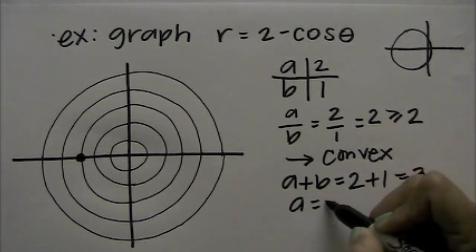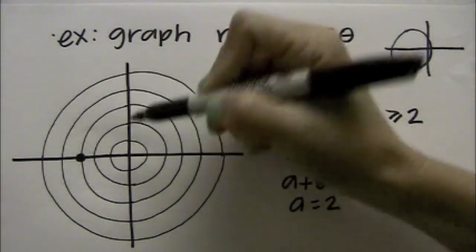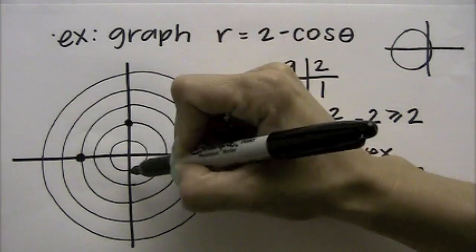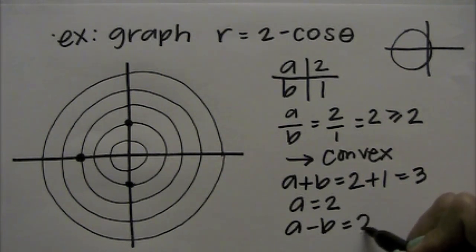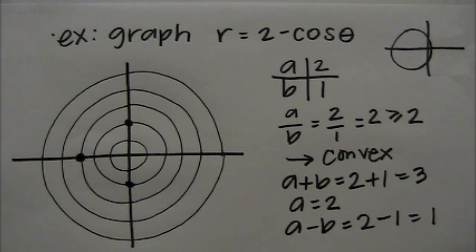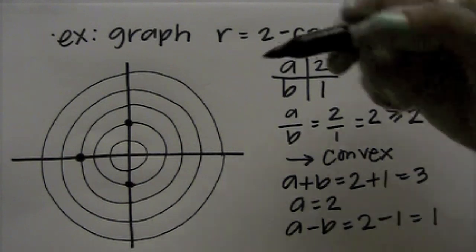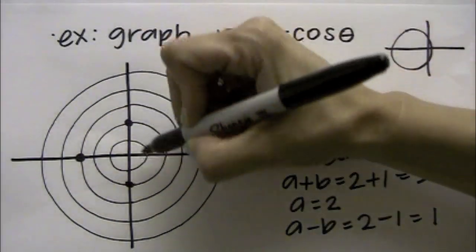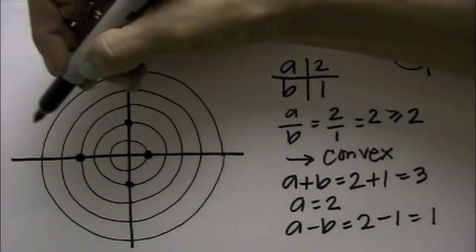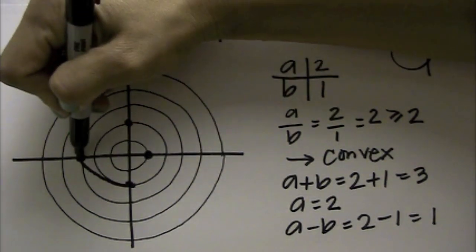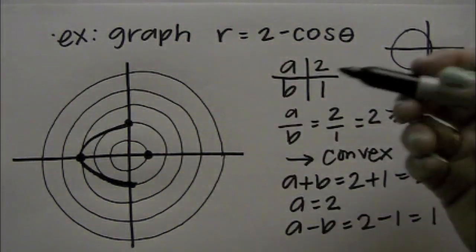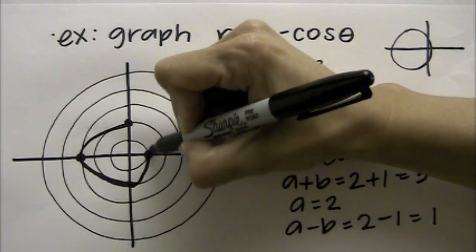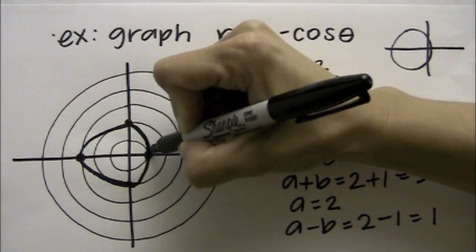Then if you identify a, which is 2, that's going to take you in the opposite direction, out 2. And finally if we do a subtract b, you get 2 minus 1, which is 1. And that tells you where you're, we before called it a lower point. But because it's a positive, we're actually going to come out 1. And what you get is this graph. And because we already know that it's convex, it's going to round out right there.